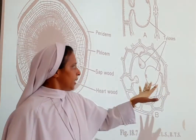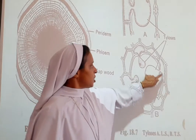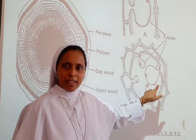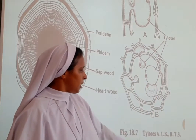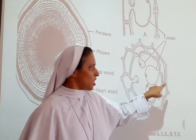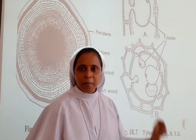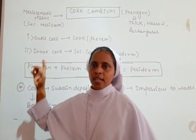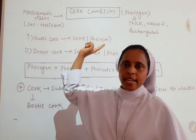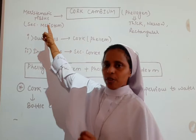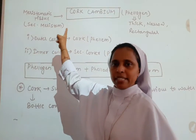Regarding tyloses, they are an extension of the xylem parenchyma — a balloon-like structure. We will be learning about that later, but we can see the images of tyloses here. Next, we will be learning about the cork cambium.